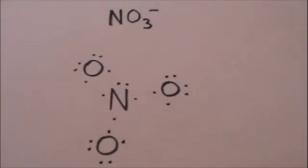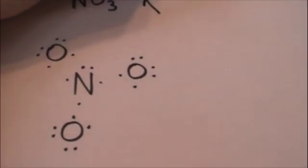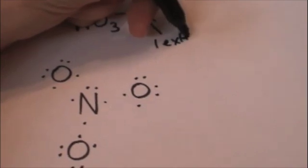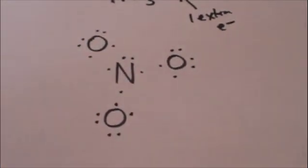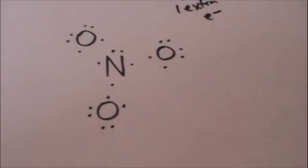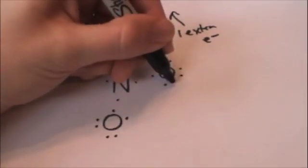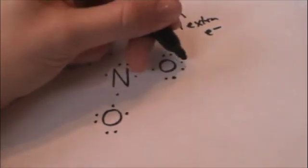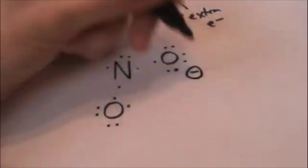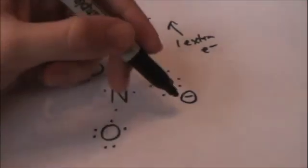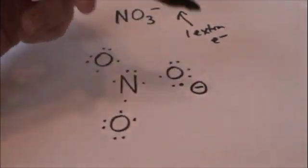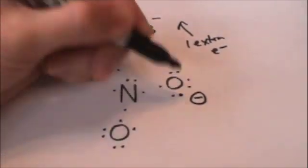So now we know that there's actually one extra electron that's going to have to go into this Lewis dot structure. So let's go ahead and just put it on the most electronegative atom, oxygen. And now this oxygen has a formal charge of negative 1, which we just say negative because we just picked it.